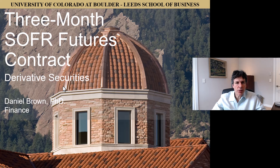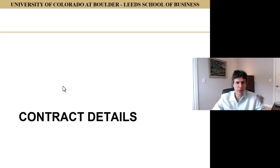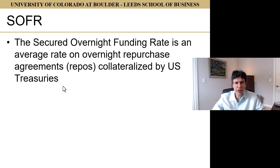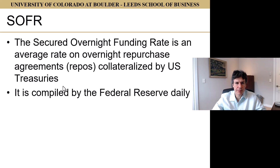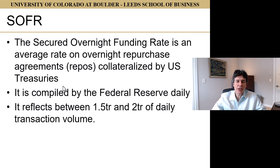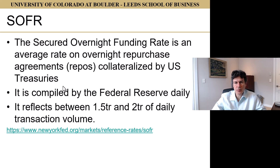In this video, I'm going to introduce the three-month SOFR futures contract. SOFR is the Secured Overnight Funding Rate — an average rate on overnight repurchase agreements, repos, collateralized by U.S. Treasuries. The Federal Reserve Bank of New York compiles it on a daily basis, and it reflects between one and a half to two trillion dollars of daily repo transactions. There's a link here which will take you to historical data.